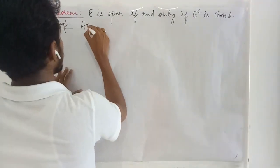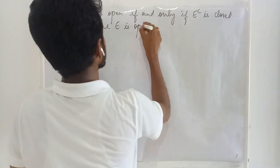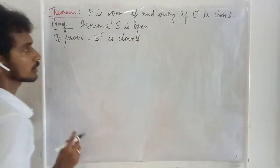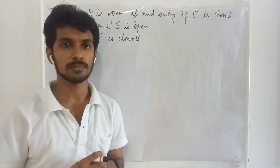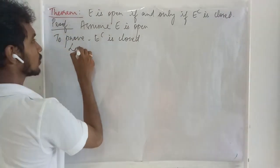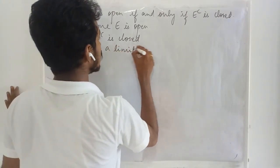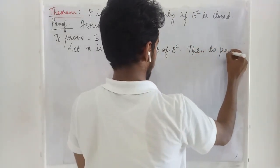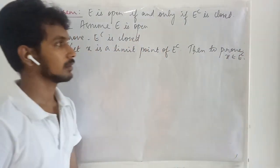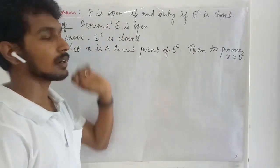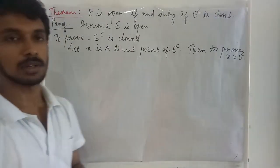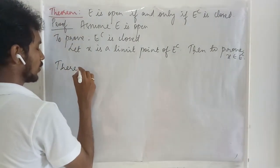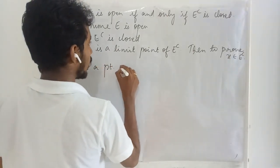Now we start the proof. First, let us take the case where E is open. Assuming E is open, we have to prove E complement is closed. In order to say E complement is closed, we need to show that every limit point of E complement belongs to E complement. So suppose x is a limit point of E complement; then we need to prove that x is present in E complement, which is equivalent to proving x is not a member of E.